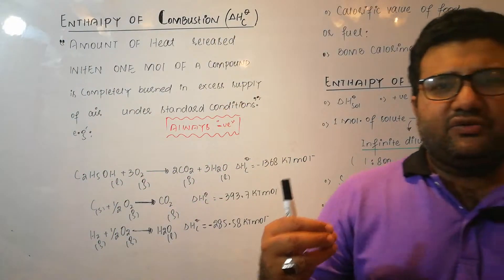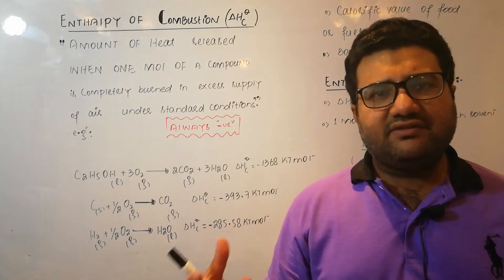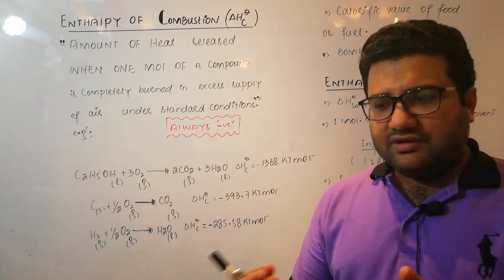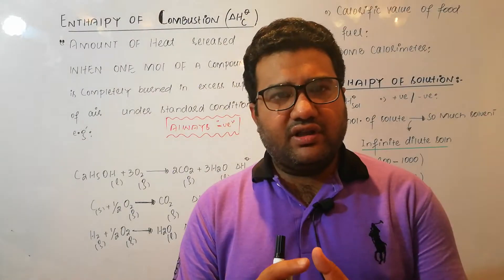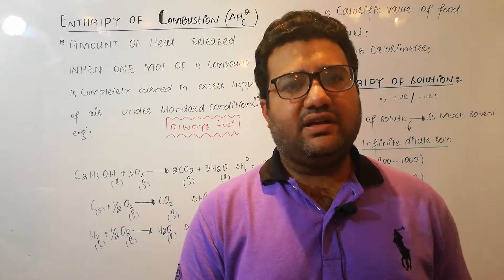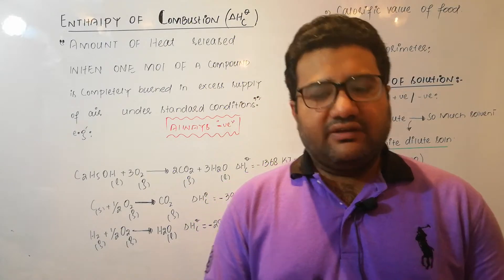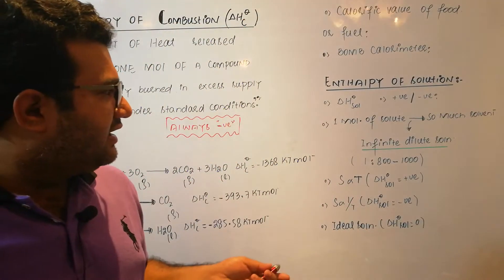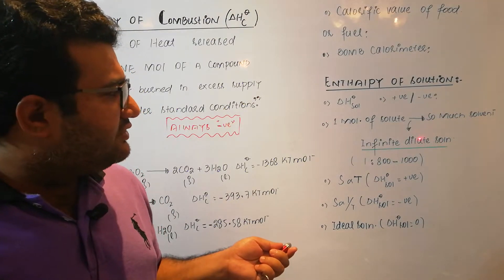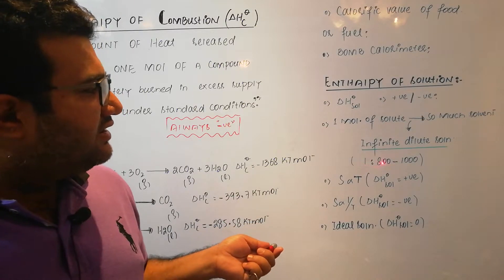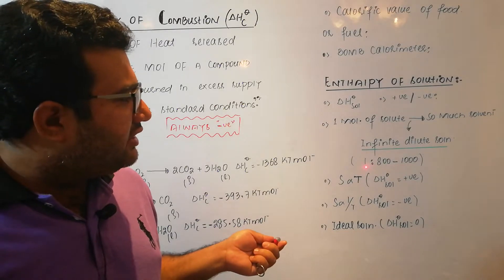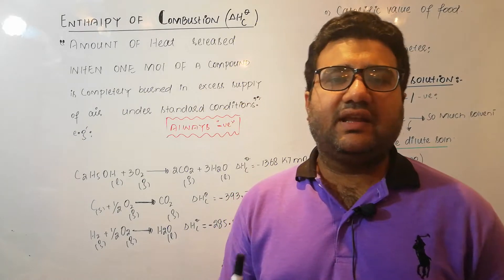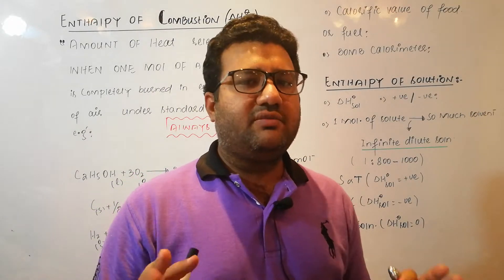When you take one mole of a solute — for example, 342 grams of sugar — and dissolve it in water, some energy will be released or absorbed, which is detected using a calorimeter. After preparing this solution, you keep on adding water. The enthalpy will change gradually, detected by the calorimeter. But a stage will come when further dilution produces no detectable heat change. That is when we say the infinitely dilute solution is prepared. In an infinitely dilute solution, the ratio of solute to solvent is approximately 1:800 to 1000, and further dilution results in no detectable heat change.